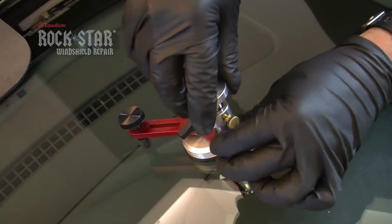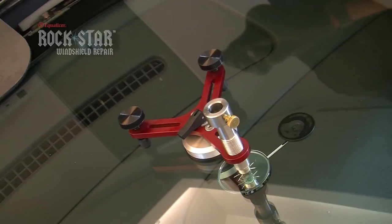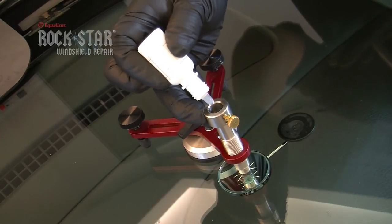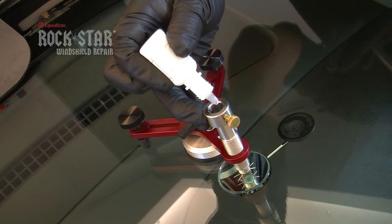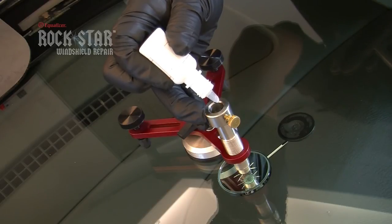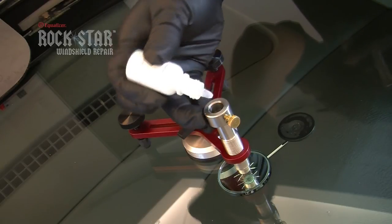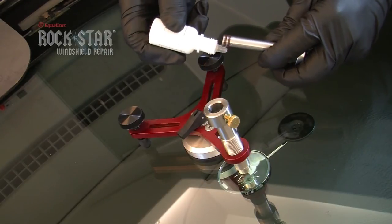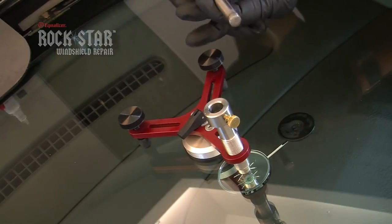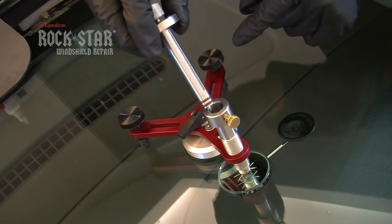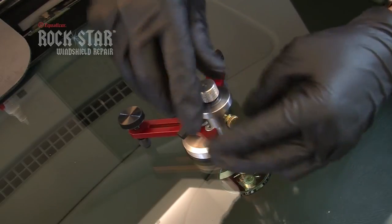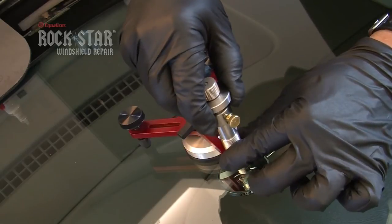Loosen the injector pressure rod. Remove the injector from the barrel. Place between three to five drops of resin into the injector barrel. Wet the two o-rings on the injector tip using resin. Place the injector back into the injector barrel making sure that the groove on the injector lines up with the retaining screw.